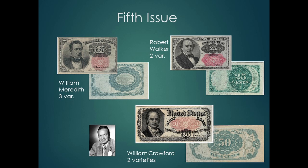William Crawford is featured on the 50-cent note. Crawford was a war and treasury secretary from 1815 to 1825. His face may look familiar. This note is affectionately called the Bob Hope Note, as many people think the portrait of Crawford looks like the famous entertainer and comedian Bob Hope. Hope is pictured on the left.